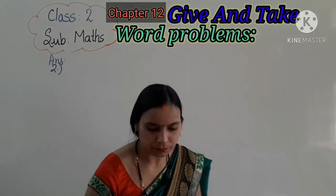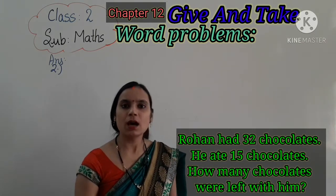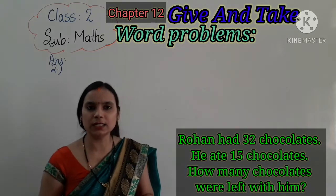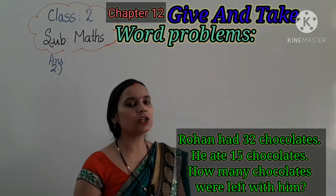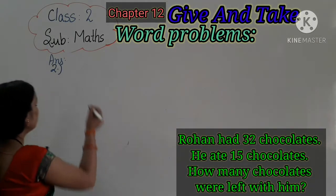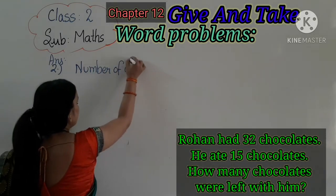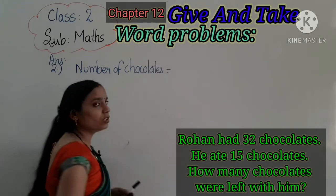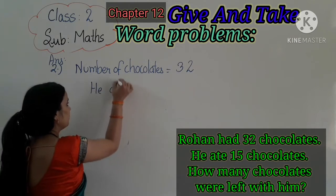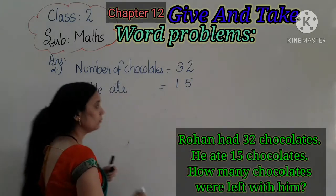Let's do the second one. Rohan had 32 chocolates and he ate 15 chocolates. Rohan के पास 32 chocolates हैं और उसने 15 chocolates खाए. How many chocolates were left with him? अब उसके पास कितनी चोकलेट बची? Total number of chocolates is 32, and he ate 15. We need to find how many are left.